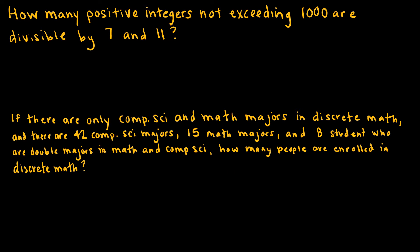Let's look at a couple of examples using the principle of inclusion-exclusion, just with two sets. How many positive integers not exceeding 1,000 are divisible by 7 or 11? I'm looking for the union of set A (divisible by 7) union set B (divisible by 11).